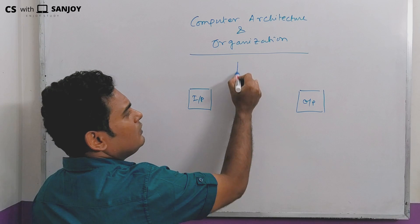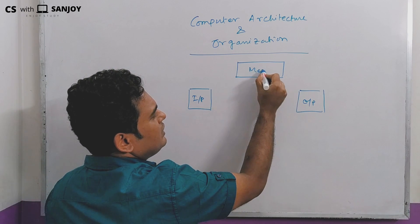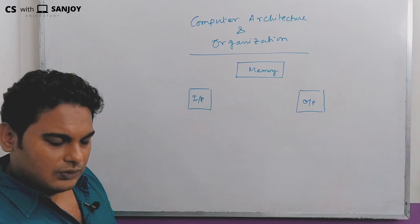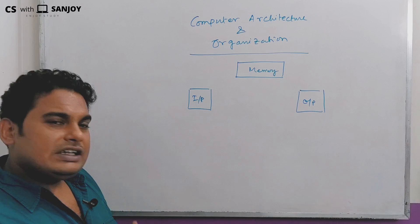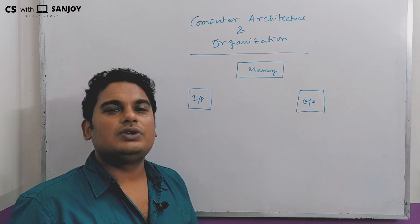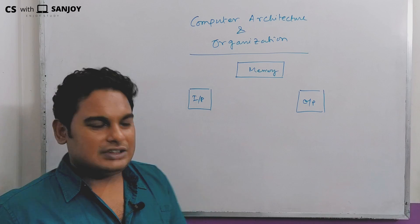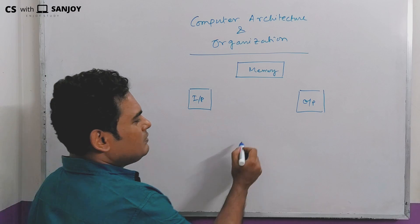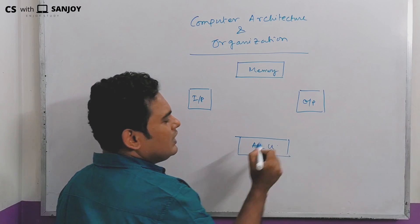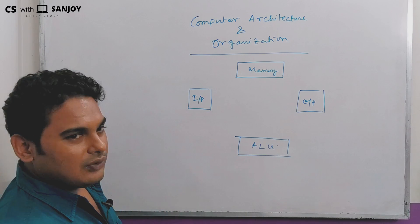Now we have to store the data. The data is processed by the arithmetic and logic unit — this is the ALU. What is ALU? That is the arithmetic and logic unit.